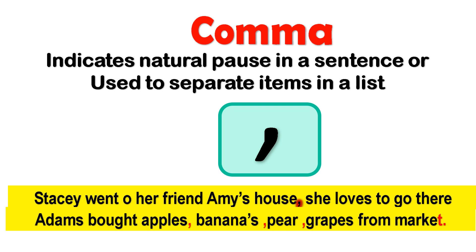Adam bought apples, bananas, pears, and grapes from the market. This example shows us where a comma can be used to separate items in a list.